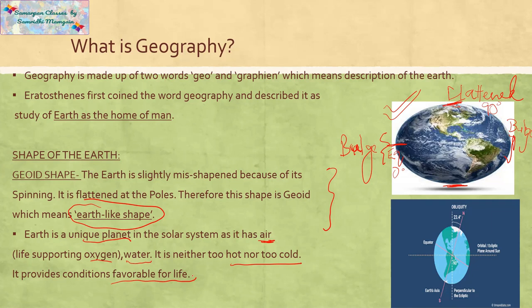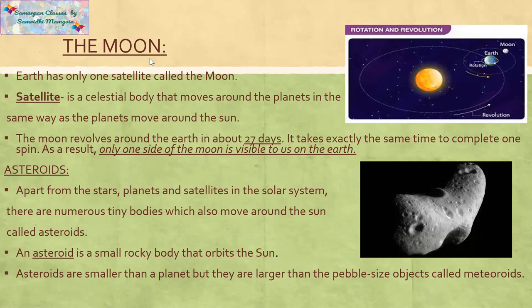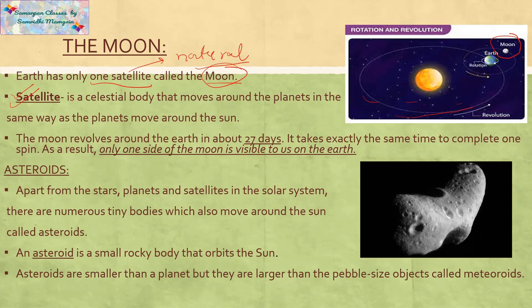Now, the Moon — everyone must know that it is the satellite of Earth. The natural satellite of Earth is the Moon, which is shown here in the diagram. A circle is shown, which is the path of the Moon — Moon revolves around the Earth. So it is the satellite of planet Earth, and Earth has just one satellite, which is the Moon. The definition of satellite: it is a celestial body that moves around the planets in the same way as planets move around the Sun.